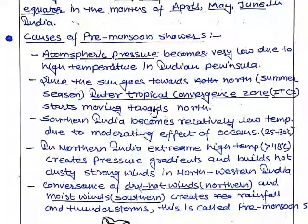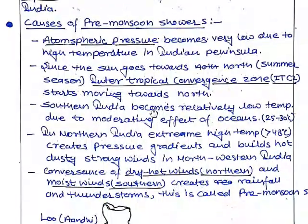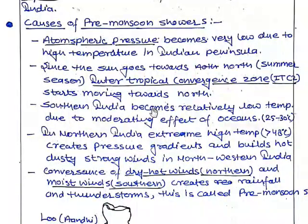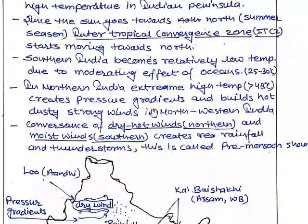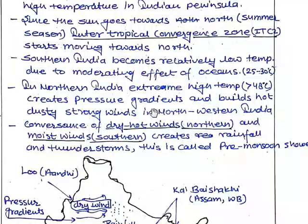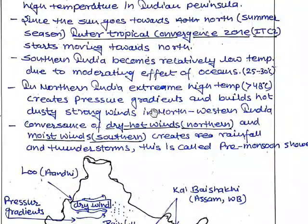Causes of pre-monsoon showers: atmospheric pressure becomes very low due to high temperature in India and the peninsula. As the sun moves northward, the ITCZ starts moving towards the north. Southern India becomes relatively lower in temperature due to the moderating effect of oceans — around 25 to 30 degrees centigrade — while northern India experiences extreme high temperature of about 40 to 48 degrees centigrade.